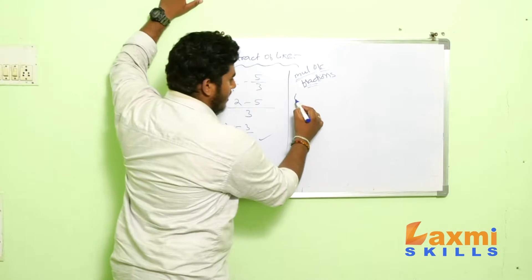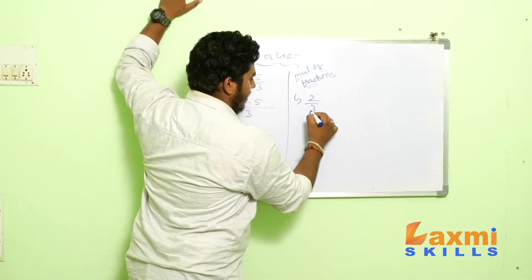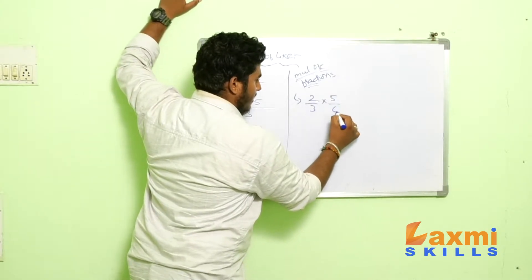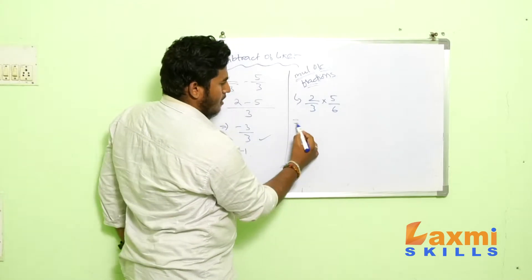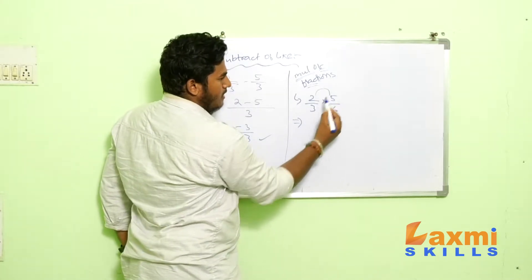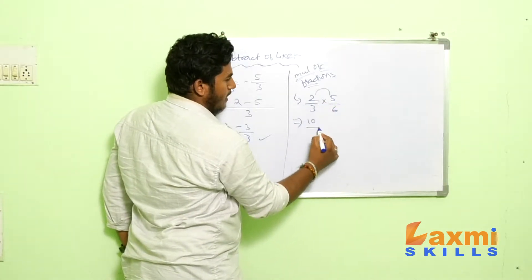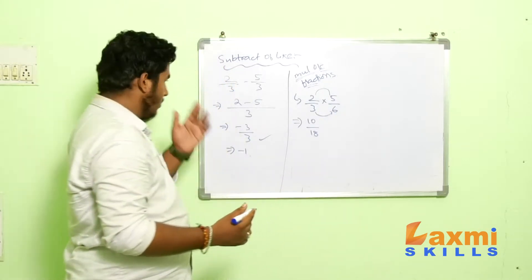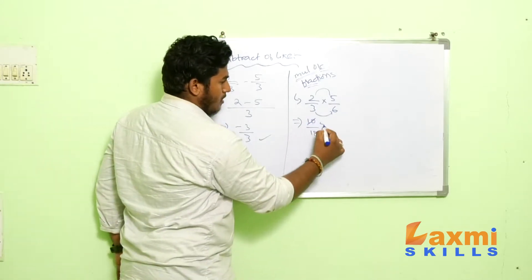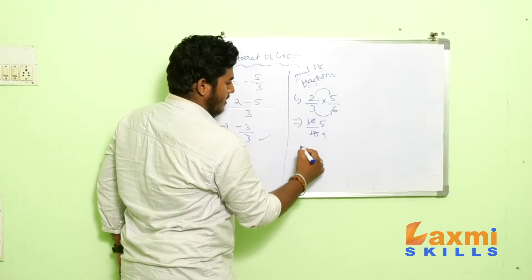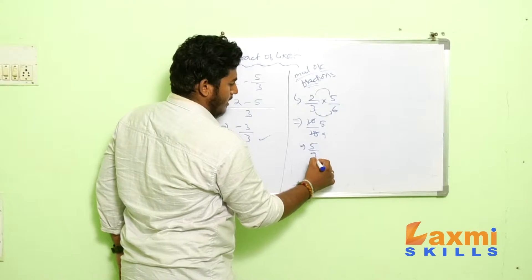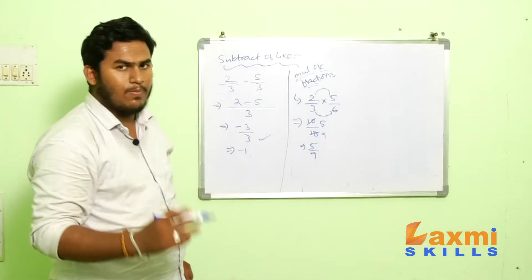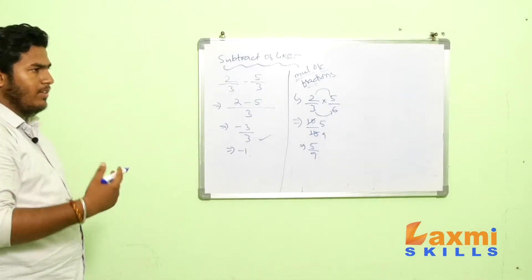So, just go ahead with these examples. 2 by 3 into 5 by 6. Here, you need to multiply the numerators. 5 times 2 are 10. And you need to multiply the denominators. 3 times 6 are 18. So, after that you can cancel. That is, 5 by 9. So, you need to multiply numerator with numerator and denominator with denominator.